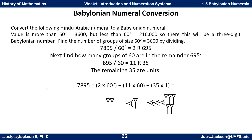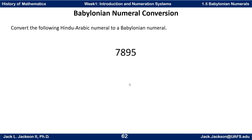Now let's try converting the other direction — converting a Hindu-Arabic numeral to a Babylonian numeral. The number is 7,895. We have to see how we would group that, not as five singles, nine tens, eight hundreds, and seven thousands as in Hindu-Arabic, but regroup it the way Babylonians would do it.